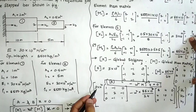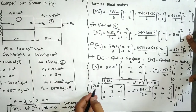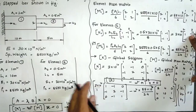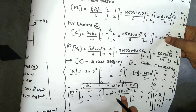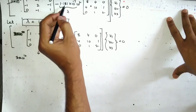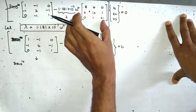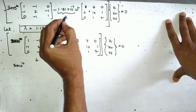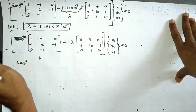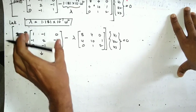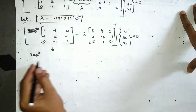Dividing through by 3×10^10, the mass scalar becomes (85×10³)/(24 × 3×10^10) = 1.181×10^−7. We define λ = 1.181×10^−7 · ω². The equation becomes: [1 −1 0; −1 2 −1; 0 −1 1] minus λ × [8 4 0; 4 10 1; 0 1 2], multiplied by {u} = {0}.